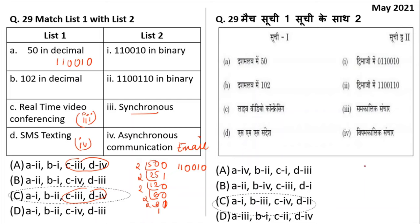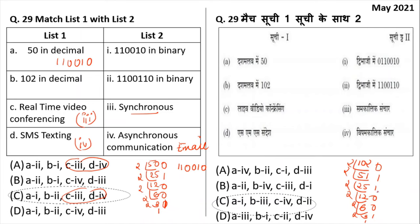For your information, converting 102 decimal to binary: 102 divided by 2 gives quotient 51, remainder 0; 51 divided by 2 gives quotient 25, remainder 1; 25 divided by 2 gives quotient 12, remainder 1; 12 divided by 2 gives quotient 6, remainder 0; 6 divided by 2 gives quotient 3, remainder 0; 3 divided by 2 gives quotient 1, remainder 1; 1 divided by 2 gives remainder 1. Written in reverse: 1100110. So 102 in decimal equals 1100110 in binary. Decimal to binary conversion is very simple — keep dividing by 2 and write remainders in reverse.